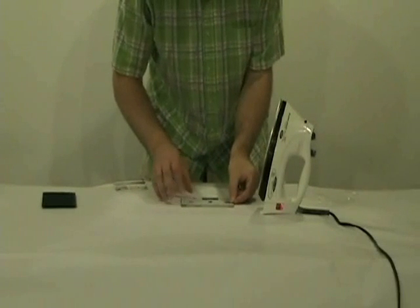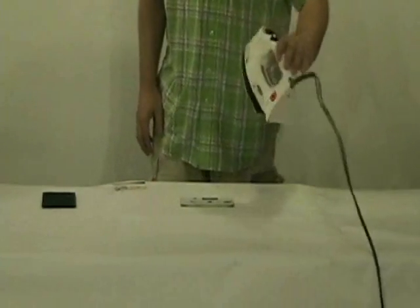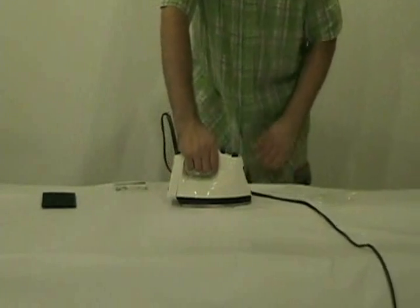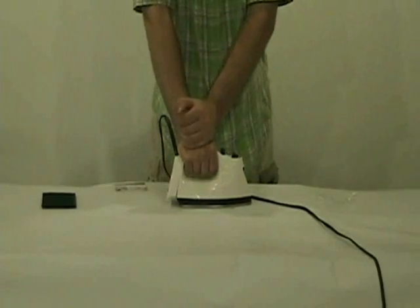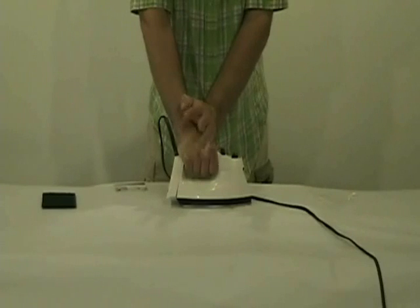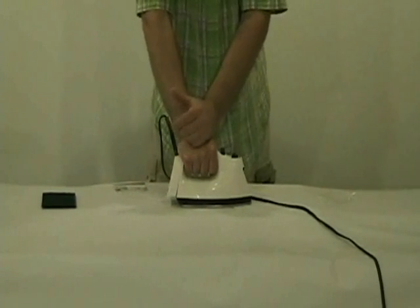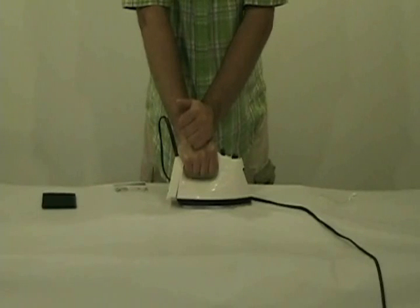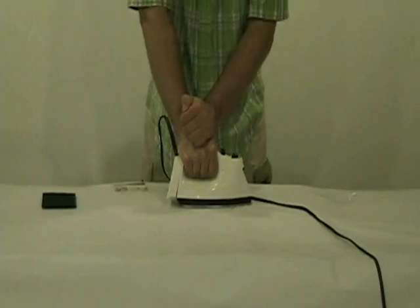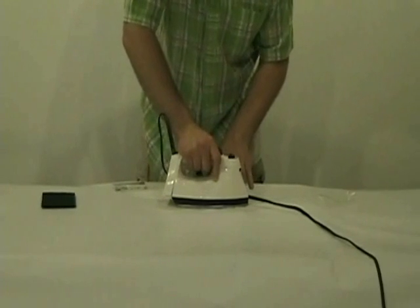My iron is preheated, it's good and hot. It does not have any water in it and it's set to the hottest setting. Get your circuit set. You want to press really hard to start off with. You want to start heating up the copper clad and you want to get everything to sort of melt to the circuit before you start moving it around. This will prevent the paper from sliding. After you can tell that it has started to adhere you can start to move around.